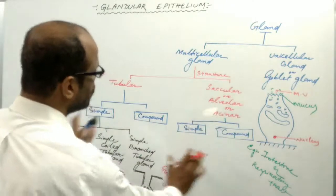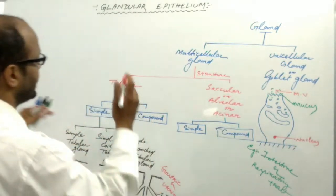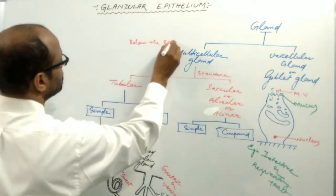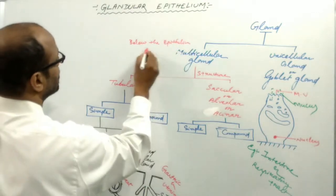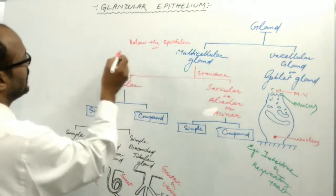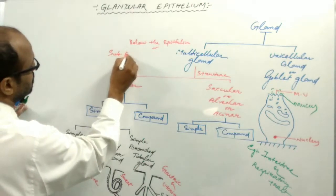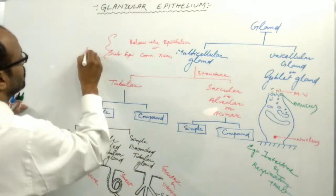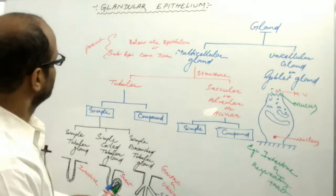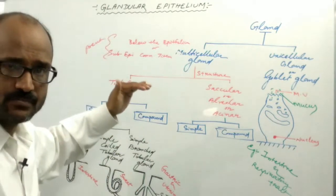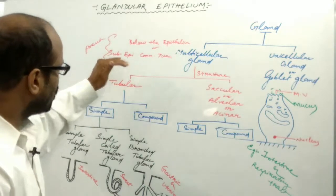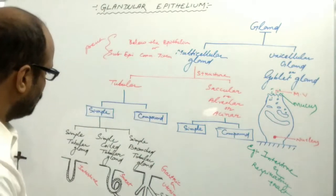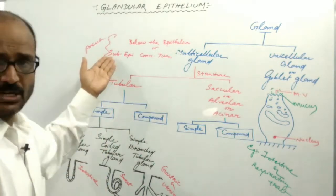All these multicellular glands are actually present below the epithelium, in the sub-epithelial connective tissue, mostly away from the surface.